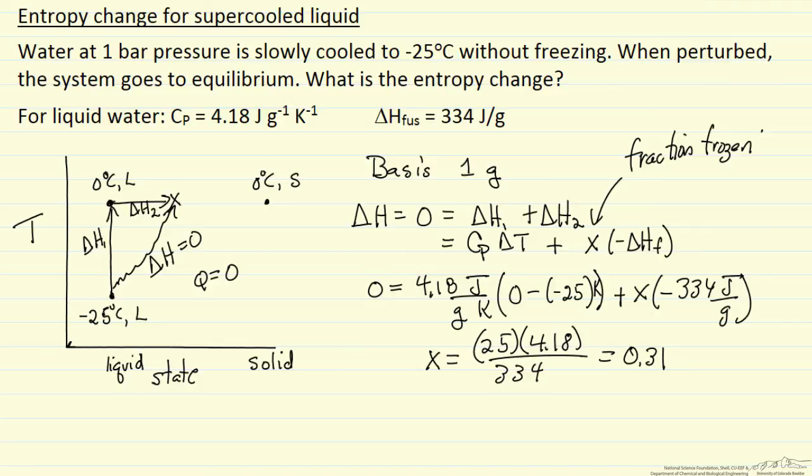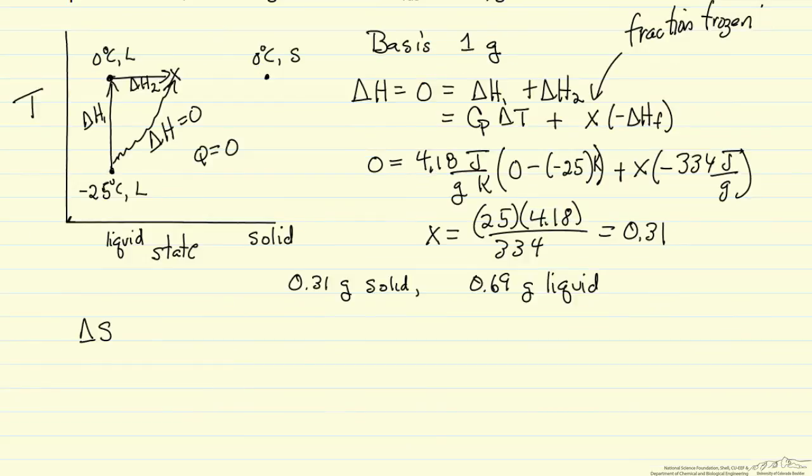The entropy change then, again, is the entropy change for process 1 plus the entropy change for process 2. If we want to calculate the entropy change total, then we would include the entropy change of the surroundings. Because the process is fast, q is 0, no work done, no entropy change for the surroundings.